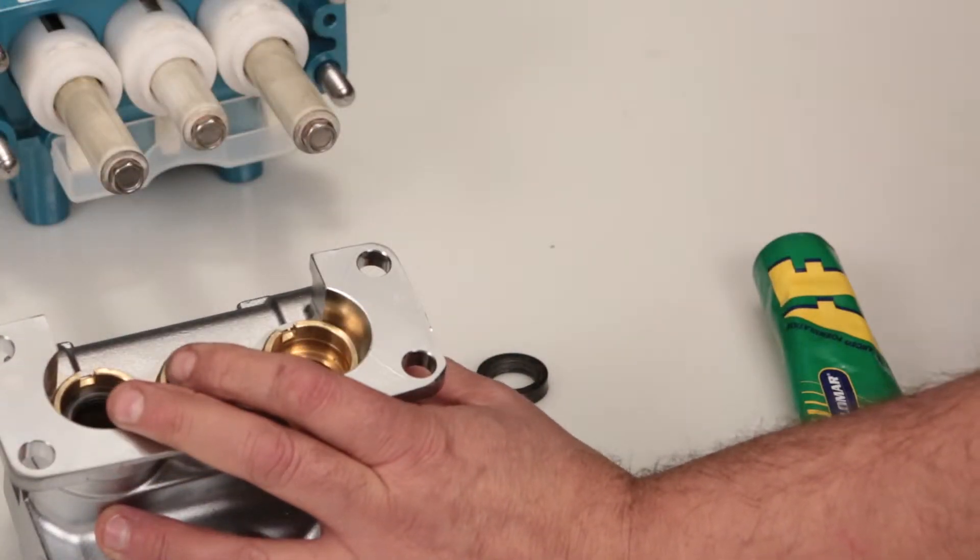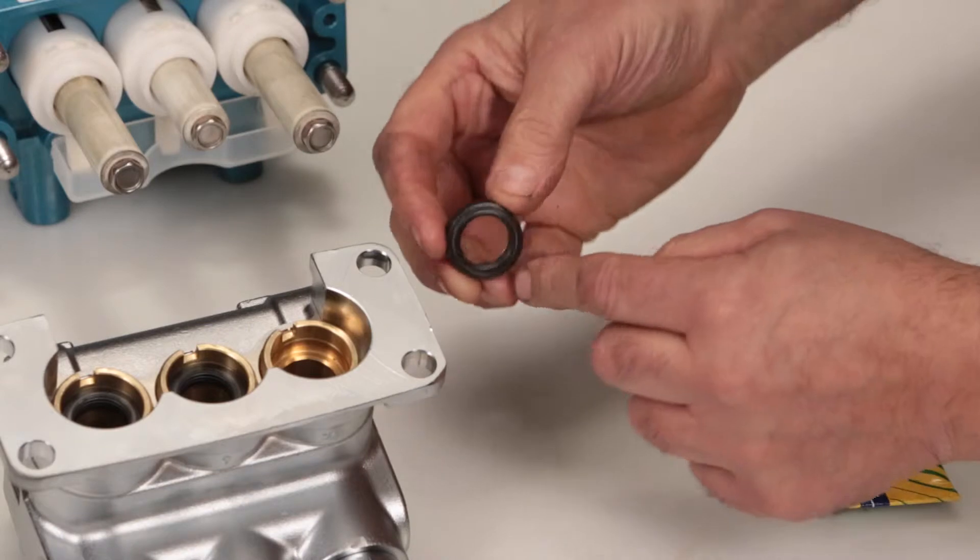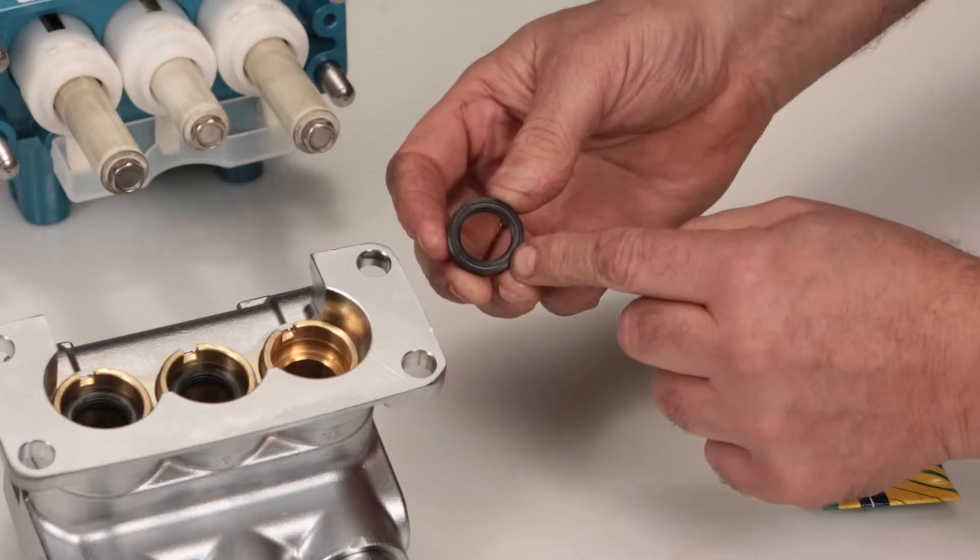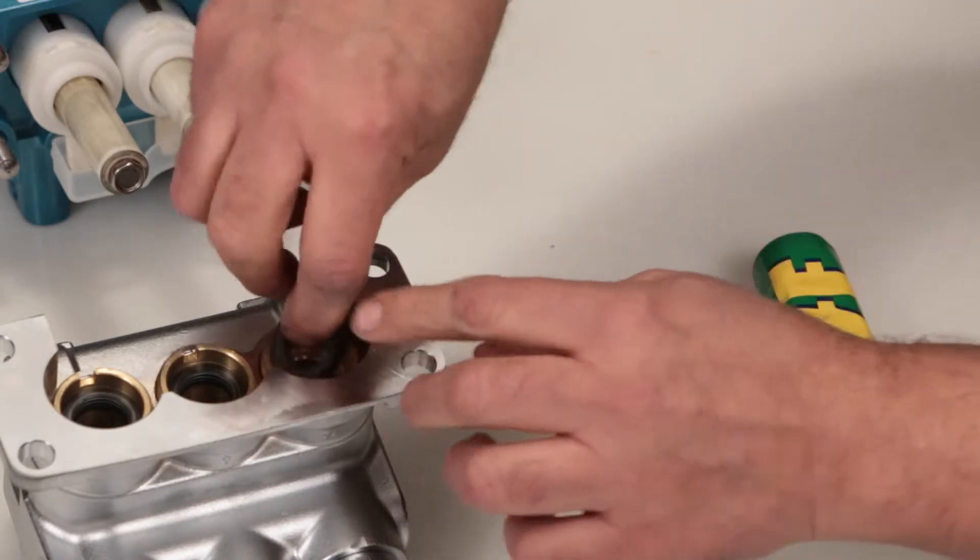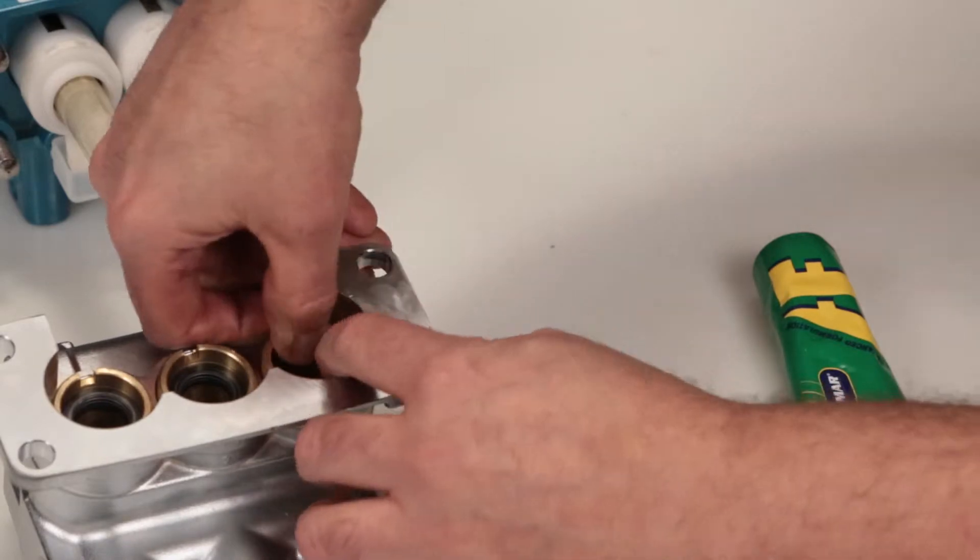Next, install the low pressure seal. The low pressure seal contains a spring on one side. Install with the spring side facing down and press into place.